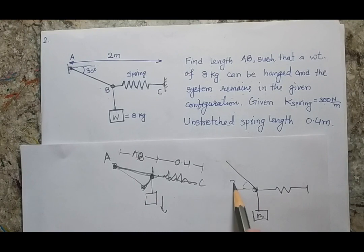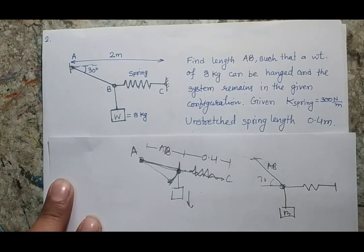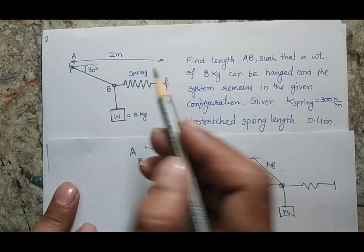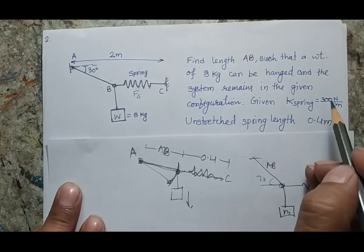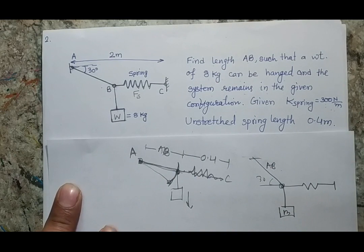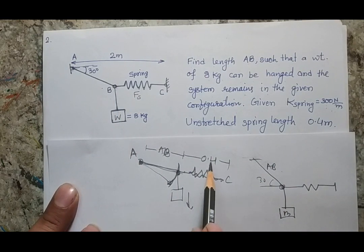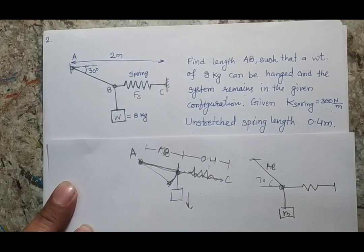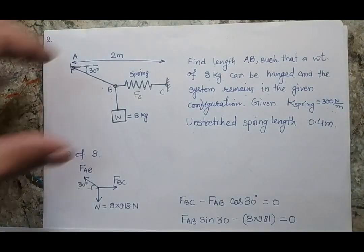If we can find the force in the spring in the current state, we can determine the stretched length. The unstretched length is given but the stretched length is not. Dividing the spring force by the spring constant gives the extension, adding this to 0.4 meters gives the new length BC. Then using trigonometry we can calculate length AB. Let's make the free body diagram of point B.